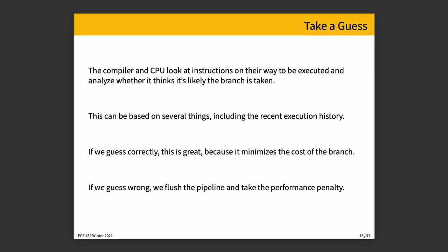There has to be a decision made about whether we think the branch is taken or not. You could base your decision on several things — for example, the recent execution history, on the idea that the best indicator of future behavior is past behavior. If we guess correctly, it minimizes the cost of the branch to effectively zero. If we guess wrong, we flush the pipeline and incur a performance penalty. Guessing is better than nothing, and how much better depends on how successful we are at guessing.